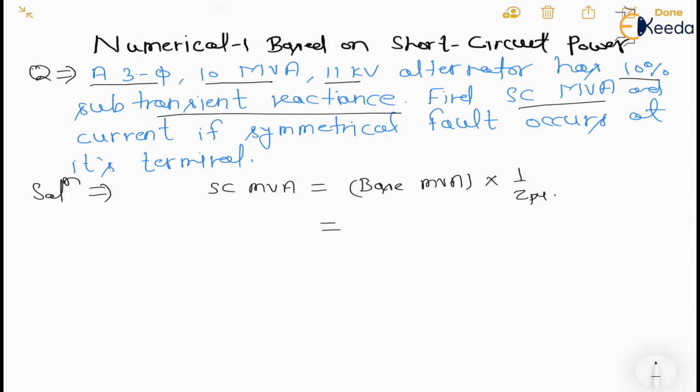So short circuit MVA will be equal to base MVA. Base MVA is given as 10 into 1 upon 0.1. So short circuit MVA you can see is 100 MVA.